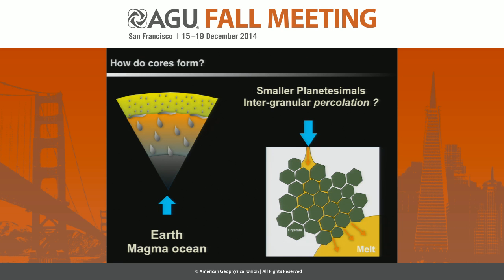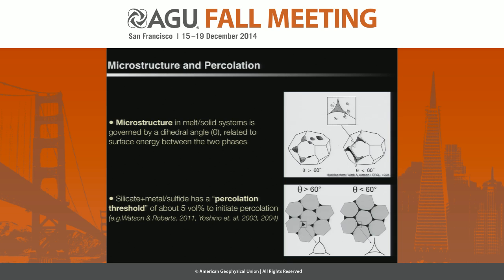Here are the end-member ideas of how it's possible to differentiate a planetary body. On a large planet like Earth, things can get very hot and we can develop a silicate magma ocean, which makes the physical process of moving the metal out of the silicate and forming a core fairly simple. But on some smaller bodies that may have never heated quite enough to melt both the metal and the silicate, we have a different process — extracting liquid metal from a solid silicate through a percolation mechanism, where liquid metallic melt flows along grain boundaries through solid silicate grains.